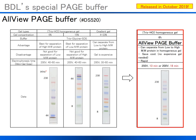While AllView Page Buffer separates proteins similarly to gradient gels, another big advantage of using AllView Buffer is running time. Running a gel normally requires one hour or longer. However, using our AllView Page Buffer, electrophoresis can be completed in 13 minutes at 250 volts or 18 minutes at 200 volts.